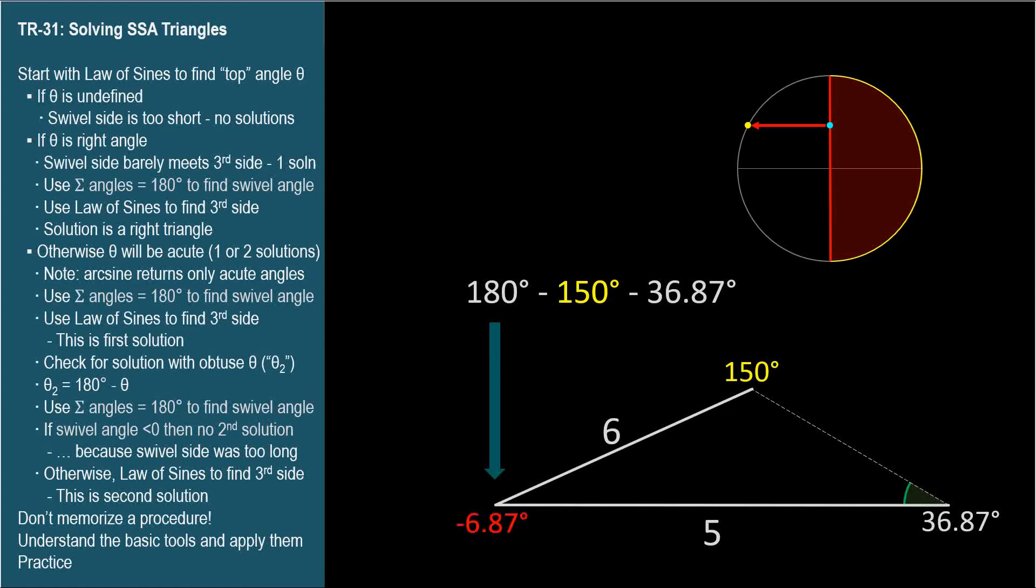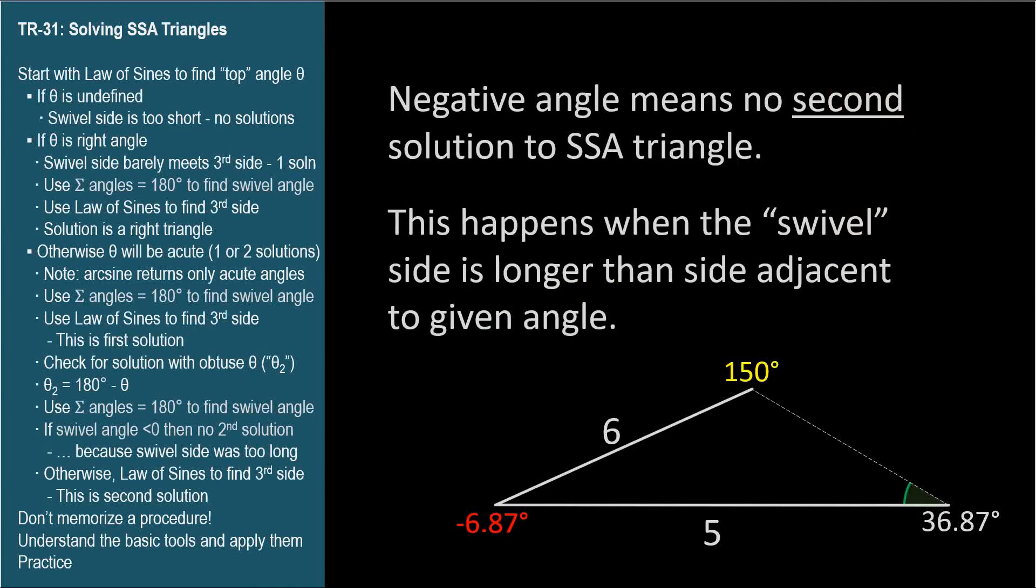Now, there's nothing wrong with a negative angle, but not inside a triangle. So this is your clue that there isn't a second solution if you didn't notice that the side opposite the given angle was longer than the side adjacent to it.